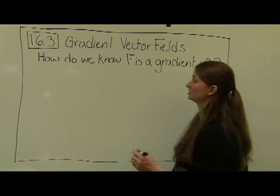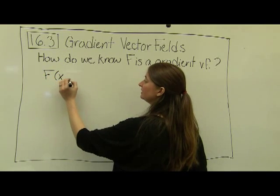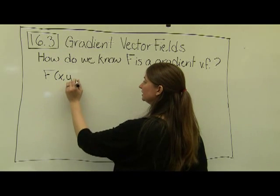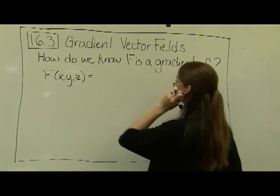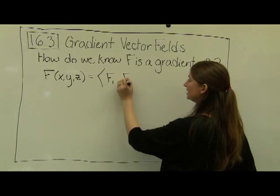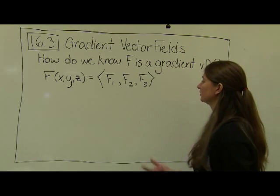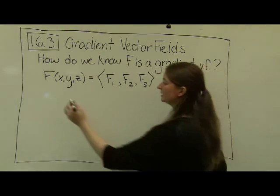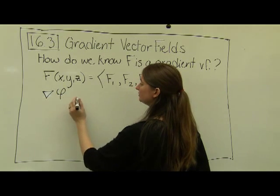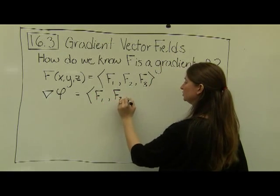Here is a quick method. Recall that our vector field, if it is a gradient vector field, as a function of x, y, and z — I'm going to do the big case — is typically denoted as having a first, second, and third component function. For all gradient vector fields, the gradient of phi is exactly equal to f1, f2, f3.